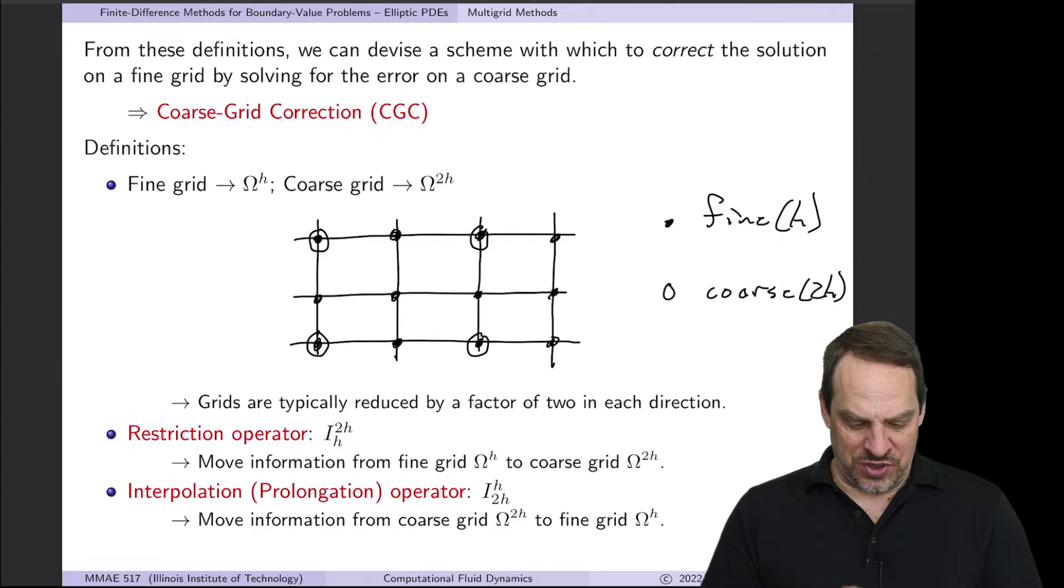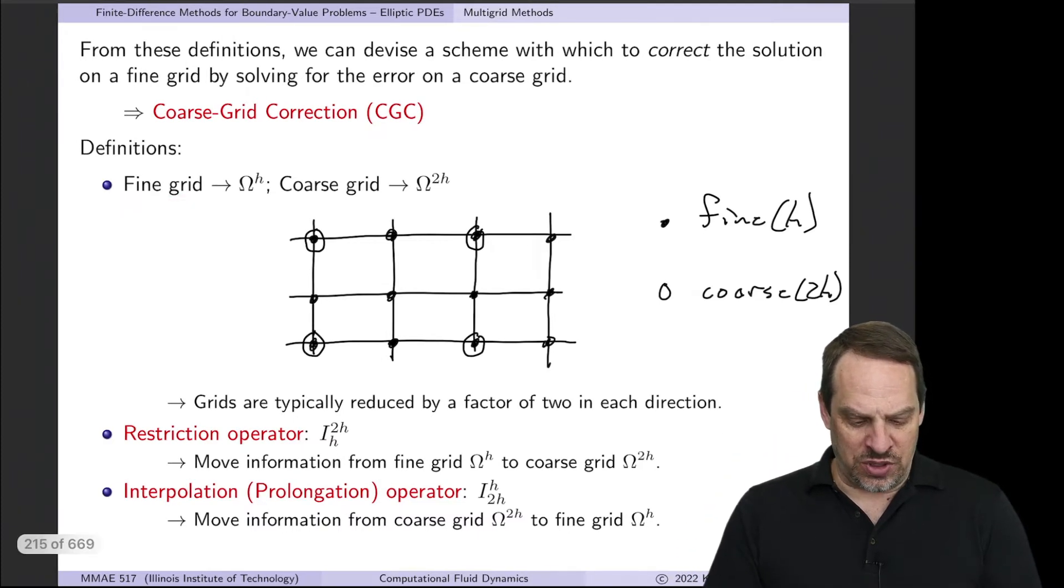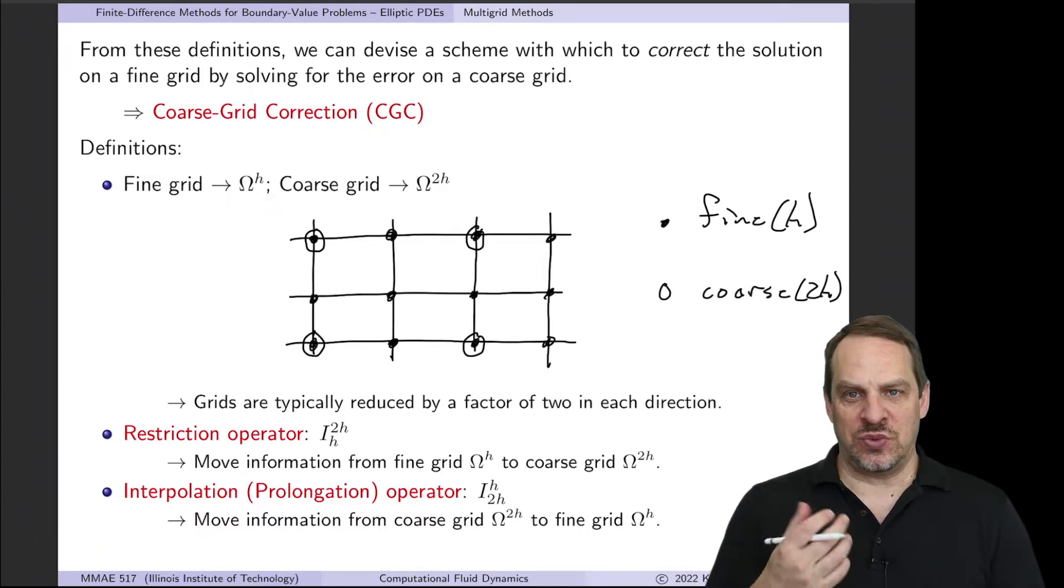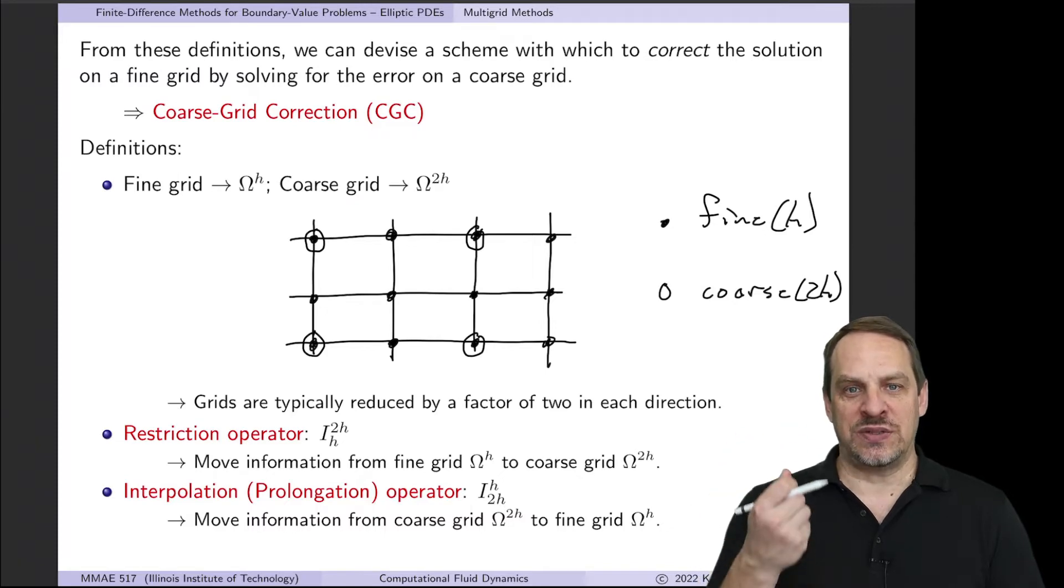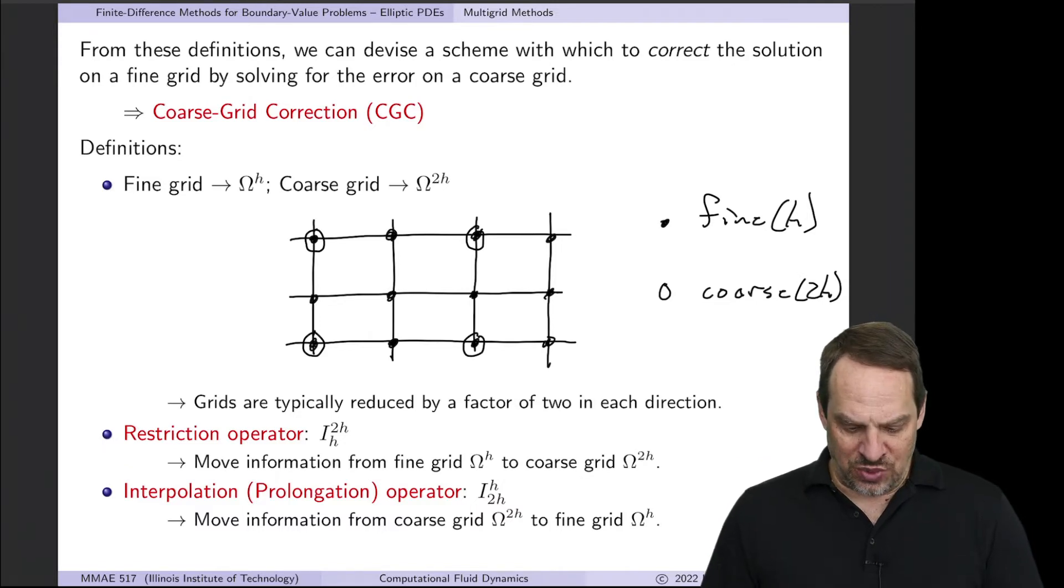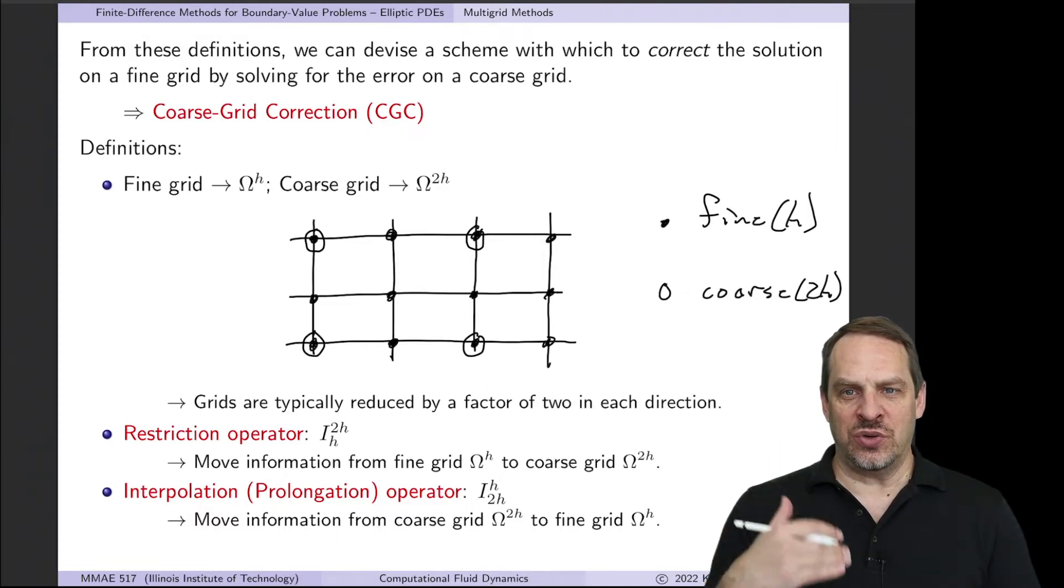So let me first define the various grids, because we're going to be going between a finer and a coarser grid. The fine grid, we're going to denote by capital Omega^h. h is what mathematicians use to indicate delta x, so it's the grid size. And then the coarse grid will be capital Omega^{2h}. So h is like delta x, that's the fine grid. 2h is like 2 delta x, that's the coarse grid taking every other point. So the way this looks is if these solid dots are the fine grid, and then the circled points, that is my coarse grid, if we take every other point out to get the coarse grid. So we have our fine grid and our coarse grid.